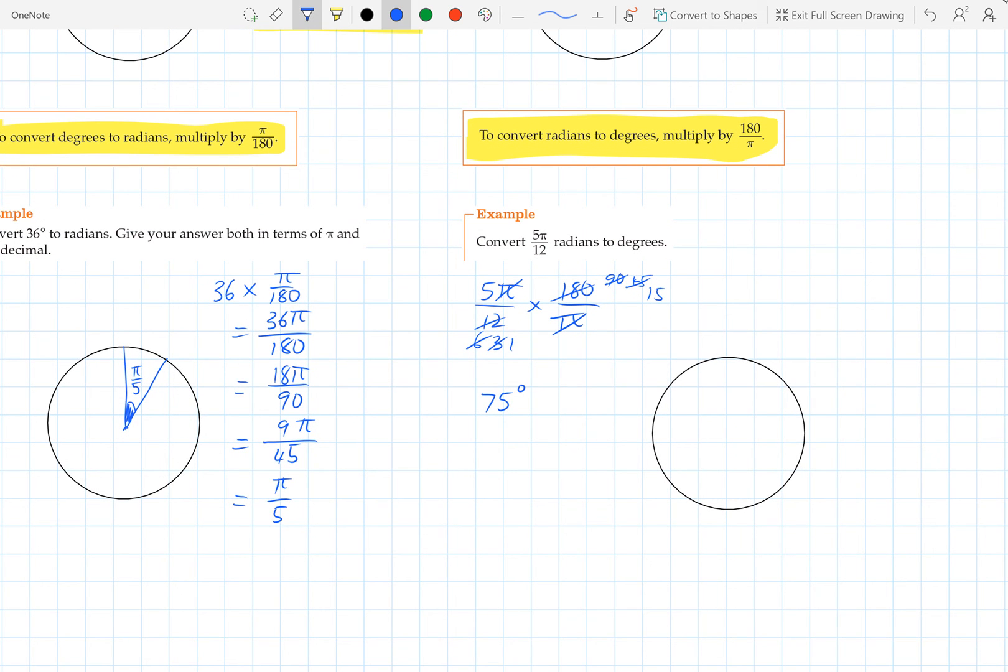Is that right? Yes, it is. Okay, so in other words, that angle there, which we can describe as 5 pi over 12, can also be described as 75 degrees.